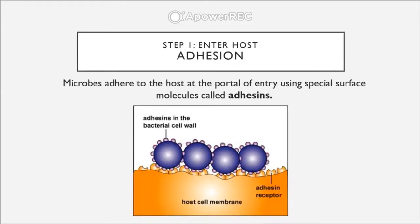Whatever the portal of entry, a microbe must have some way to remain attached to the host. We need something called adhesion — microbes adhere to the host at the portal of entry using special surface molecules called adhesins. What adhesins are specified to bind to are called adhesion receptors, found on the host cell membrane. Bacterial cell walls have evolved to have adhesins that bind to molecular markers on the outside of the host cell membrane.